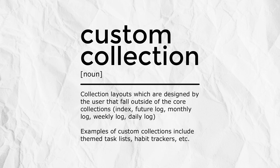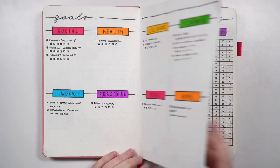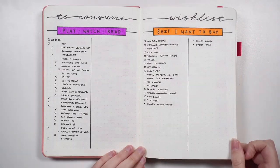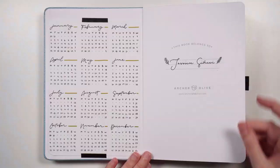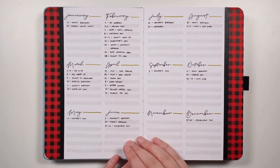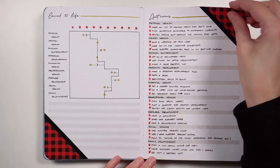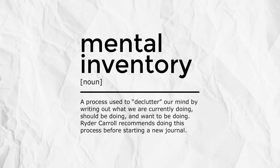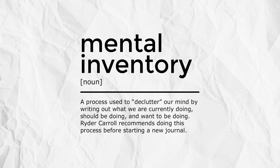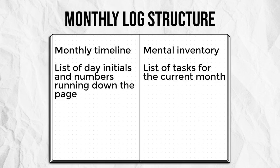Custom collections are collection layouts designed by the user that fall outside the core collections — so for example, a habit tracker or sleep log, anything that isn't the index, future log, monthly, weekly, or daily log. A stack is your full set or portfolio of collections, including both core and custom ones. A mental inventory is an activity done prior to setting up a new bullet journal to get all your tasks out onto paper — similar to a brain dump. The term is also used to describe the tasks page for a monthly log setup.